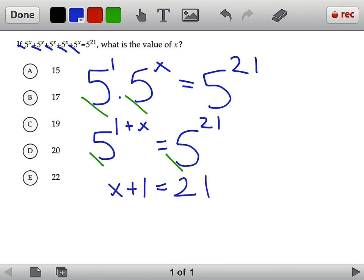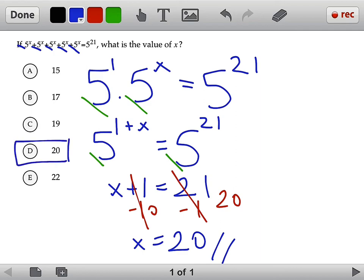Now, if we subtract 1 from both sides, we will actually get 0 here and 20 here. And in the most simple form we will get x equals 20, which is answer choice D.